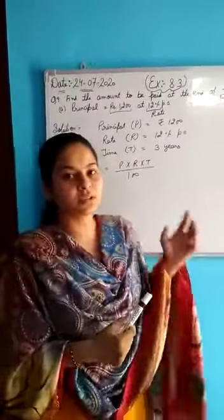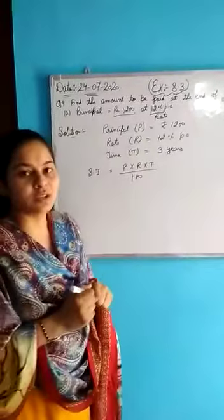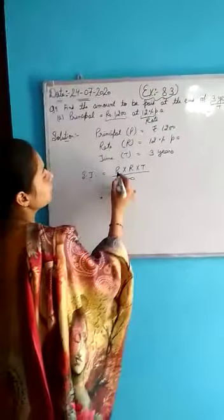In this class, as you know, the formula to find simple interest is principal into rate into time divided by 100. So now, to find simple interest, just put the given values.